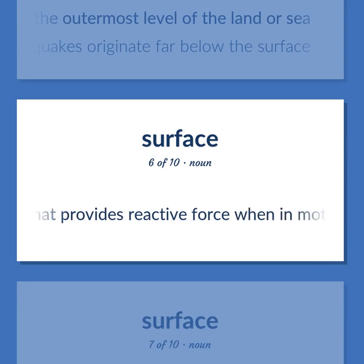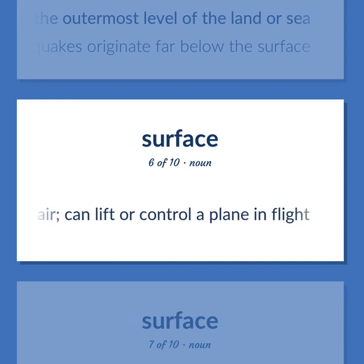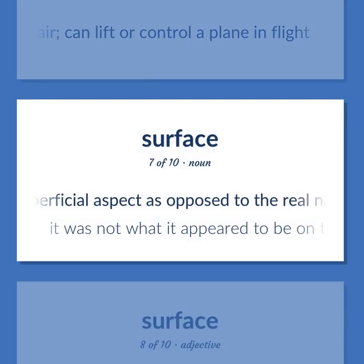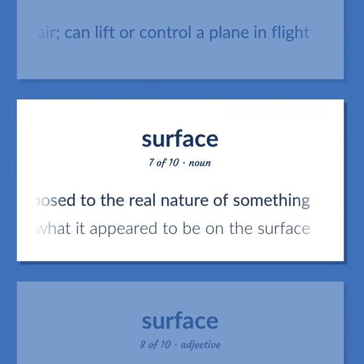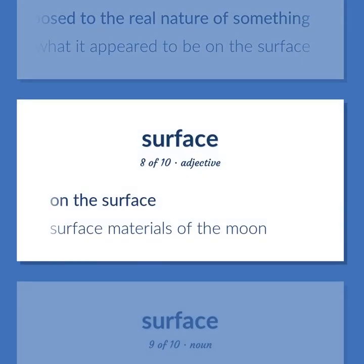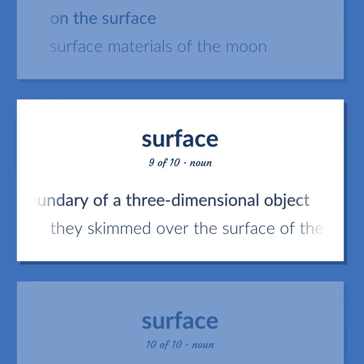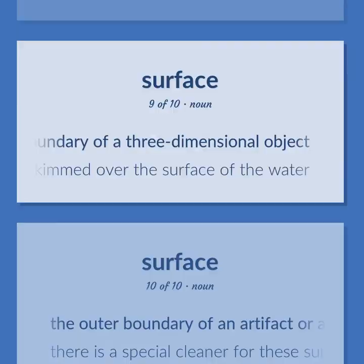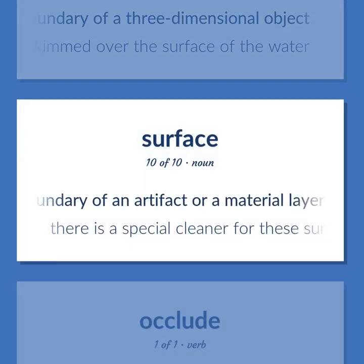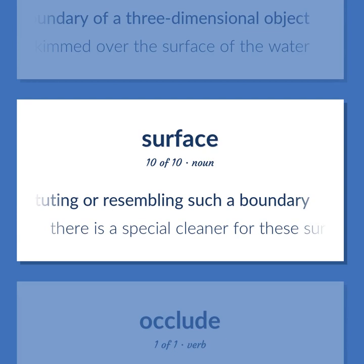A device that provides reactive force when in motion relative to the surrounding air, can lift or control a plane in flight. A superficial aspect as opposed to the real nature of something. It was not what it appeared to be on the surface. Surface materials of the moon. The extended two-dimensional outer boundary of a three-dimensional object. They skimmed over the surface of the water. The outer boundary of an artifact or a material layer constituting or resembling such a boundary. There is a special cleaner for these surfaces.